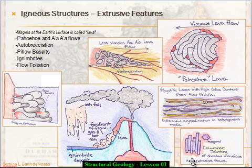As magmas cool, they often show columnar jointing — you should Google some pictures, it's very interesting. They usually display a hexagonal shape. This is a stress-strain relationship as the magma freezes: the density changes and it breaks up and fractures along certain planes. We can talk about that in more detail when we understand stress and strain, but it's a very interesting structure to look at.